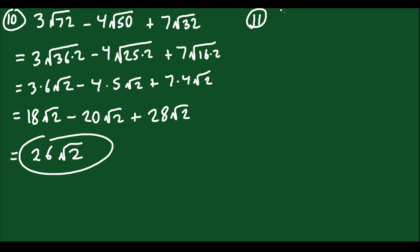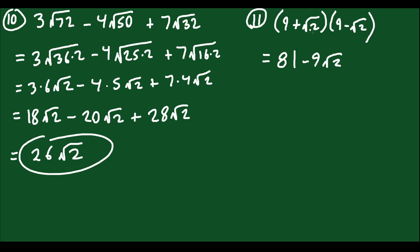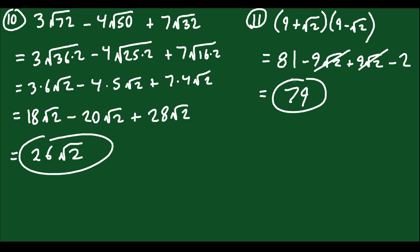Last one: (9 + √2)(9 − √2). Expand this: 9 times 9 is 81. 9 times negative √2 is minus 9√2. √2 times 9 is plus 9√2. √2 times negative √2 is minus 2, because the square root of something times itself equals that thing. The middle terms cancel, leaving 81 minus 2, which equals 79. Hopefully this has given you exposure to a little bit of everything you can expect to see when simplifying or expanding expressions containing radicals.